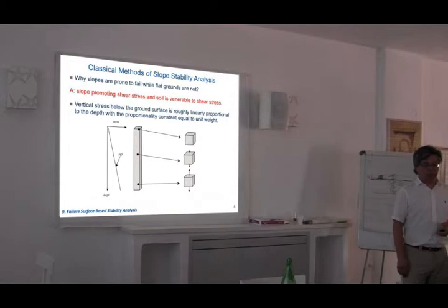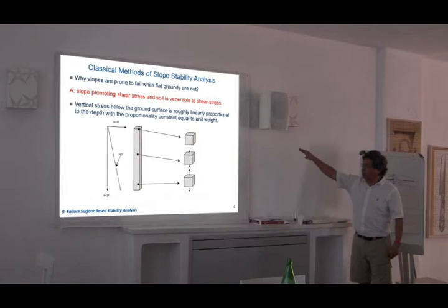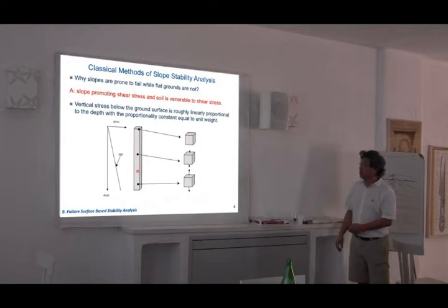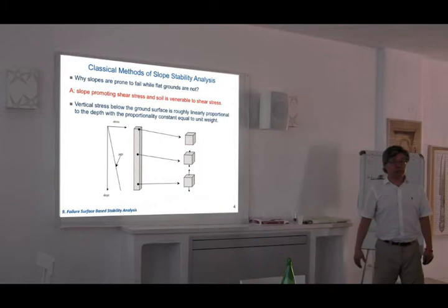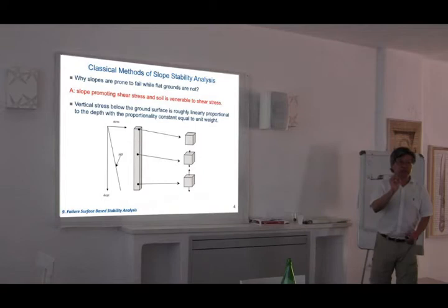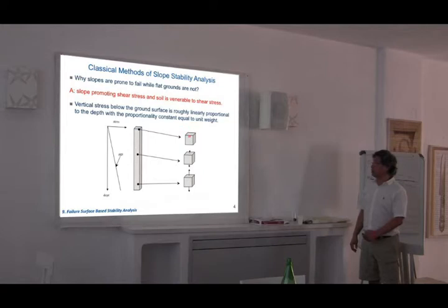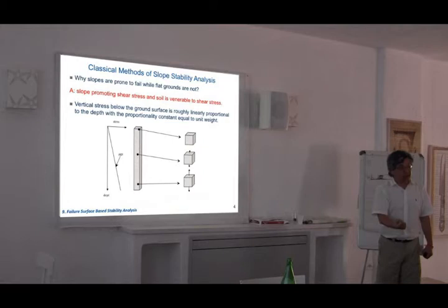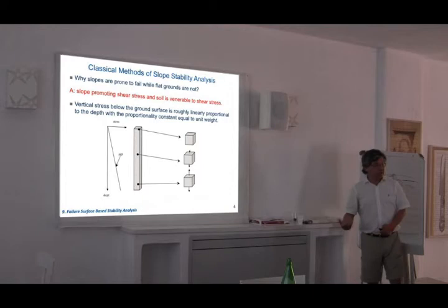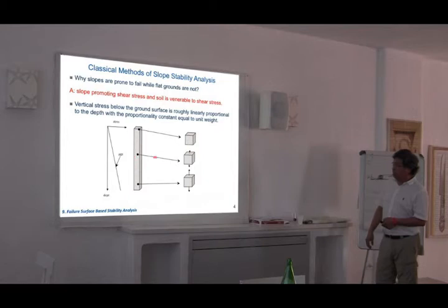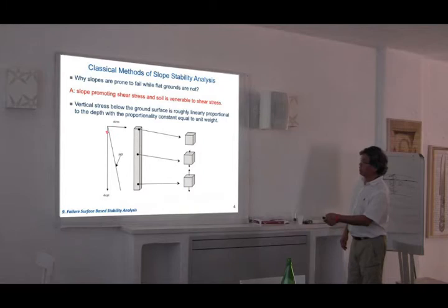Let's look at a profile of flat land and different points — one near the surface, one somewhat below, and one deeper. We ask what is the stress at each point, particularly the vertical stress. Because of gravity pulling down, near the ground we have a small vertical stress due to little overburden. As you go deeper, the vertical stress increases. You can calculate it precisely as unit weight times depth. That is how the vertical stress is calculated.